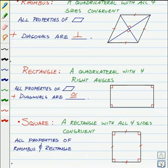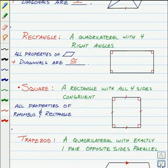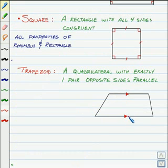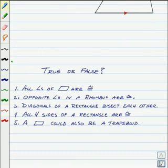And finally, we're going to talk about a trapezoid. A trapezoid is a quadrilateral with exactly one pair of opposite sides parallel — no more, no less. Knowing all of that, let's take a quick quiz.